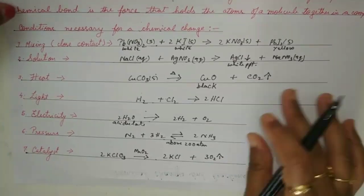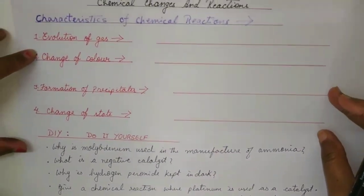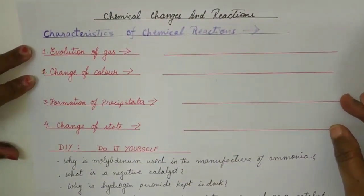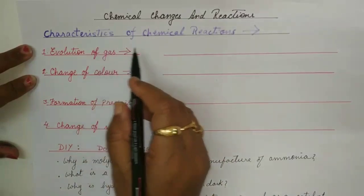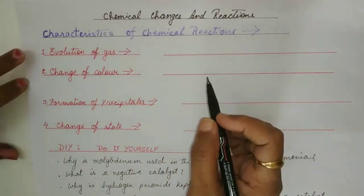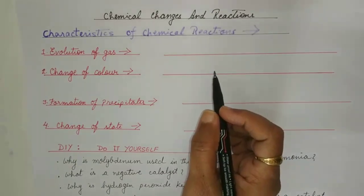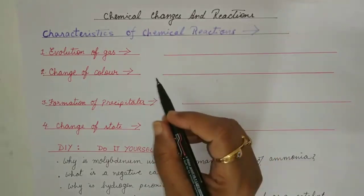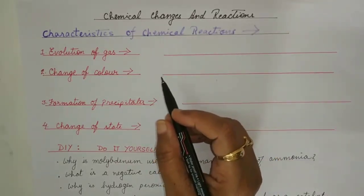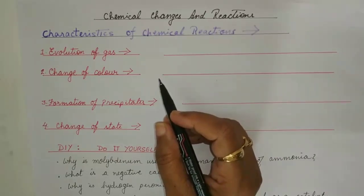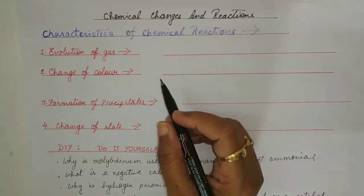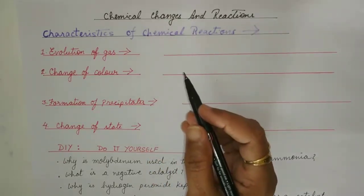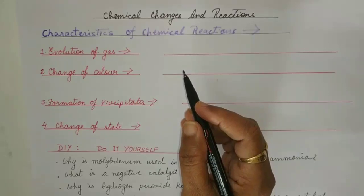Now let us take the next topic of this chapter. When we talk about chemical changes and reactions, we know that there are certain characteristics of chemical reactions. For example, gas came out — you know the color of the gas; precipitates came out — you know the color of the precipitates; you know the color of the compounds; there is a state change. So now we will be talking about the characteristics of chemical reactions.